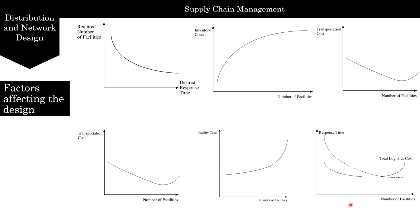As the number of facilities increases, total logistics cost first decreases then increases. Amazon has more than one warehouse primarily to reduce its logistics cost and improve response time. If a firm wants to reduce response time further, it may have to increase the number of facilities beyond the point where logistics cost is minimized, causing logistics costs to start increasing.